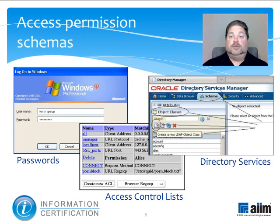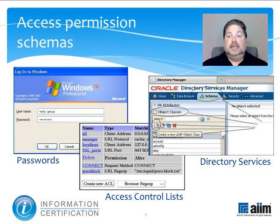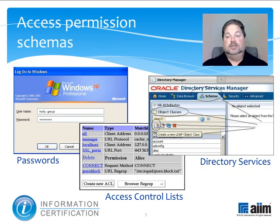Another critical component is access permission schemas, which primarily are anti-trespassing devices designed to keep out every potential user of the system except for those allowed to come in. Most often, access permission these days involves one or more of password protection, directory services, and access control lists.